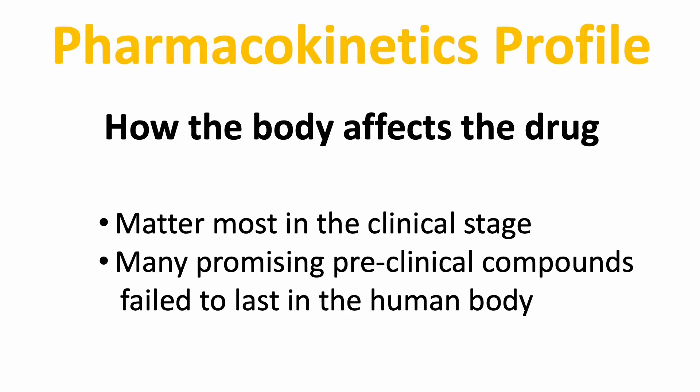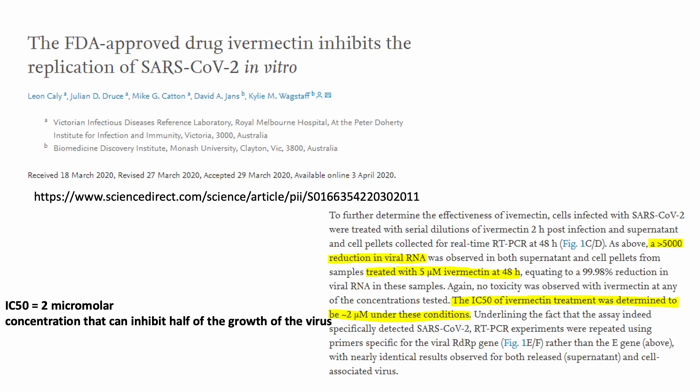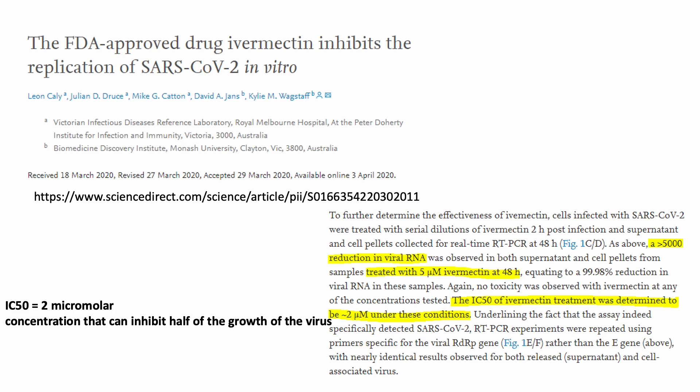What I would like to focus on in this video is the drug's effect from three pharmaceutical science aspects. Number one: the pharmacokinetics profile. This refers to how the body affects the drug, and that is what most matters at the clinical stage. In fact, many preclinical compounds never get a chance outside the lab because they failed to survive our body's natural ability to eliminate foreign chemicals. Here is an earlier major paper that showed ivermectin at 5 micromolar concentration could significantly inhibit SARS-CoV-2 viral replication in an in vitro study, and the IC50 — the concentration that can inhibit half of the virus growth — is at 2 micromolar. That earlier paper generated a lot of buzz and led to many other studies.